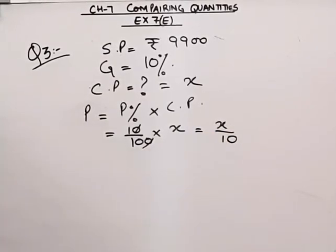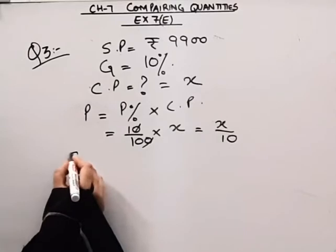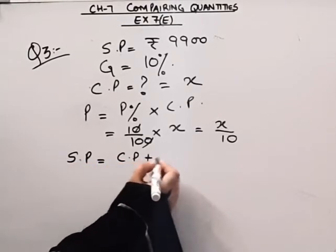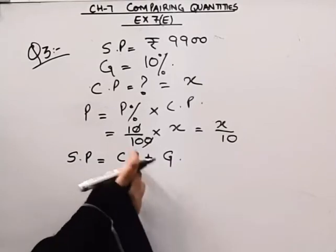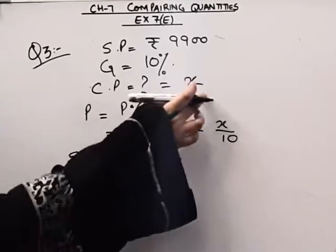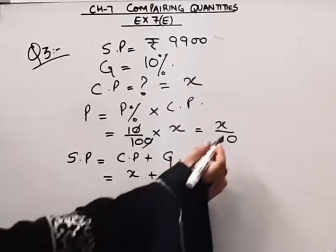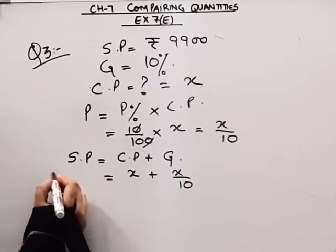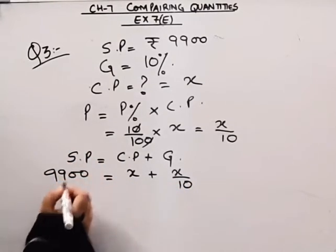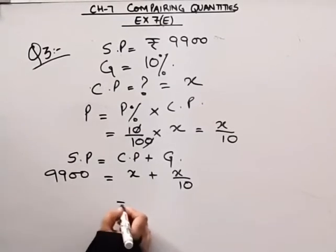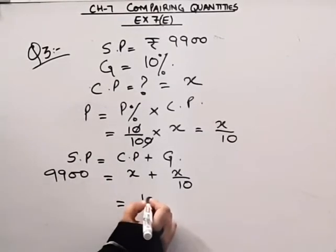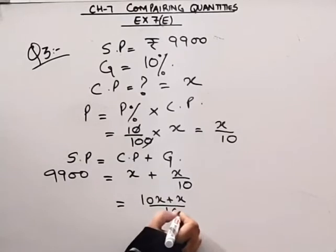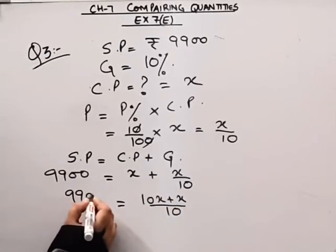We know that selling price is equal to cost price plus gain. Cost price is x, the gain is x upon 10, and the selling price is given as 9,900. Putting it in the formula: 10x plus x divided by 10 equals 9,900, which simplifies to 11x divided by 10 equals 9,900, so x equals 9,000.